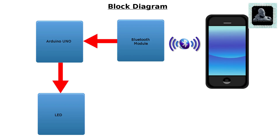Let's understand the design and working of this project using the given block diagram. The project mainly has three blocks. The first block is the Bluetooth module, which will help the Arduino establish a connection with the Android app through the Bluetooth channel. The second block is Arduino, which will control the LED according to instructions received from the Android app. The third block is the LED, connected to the digital output pin of Arduino.